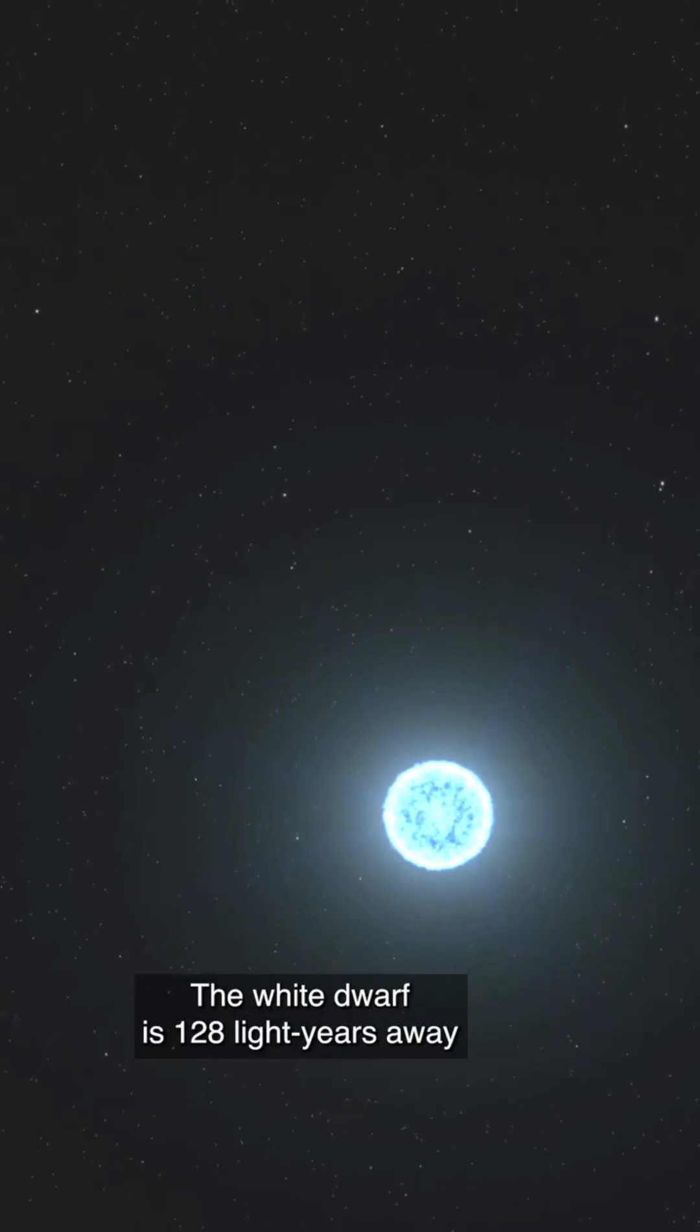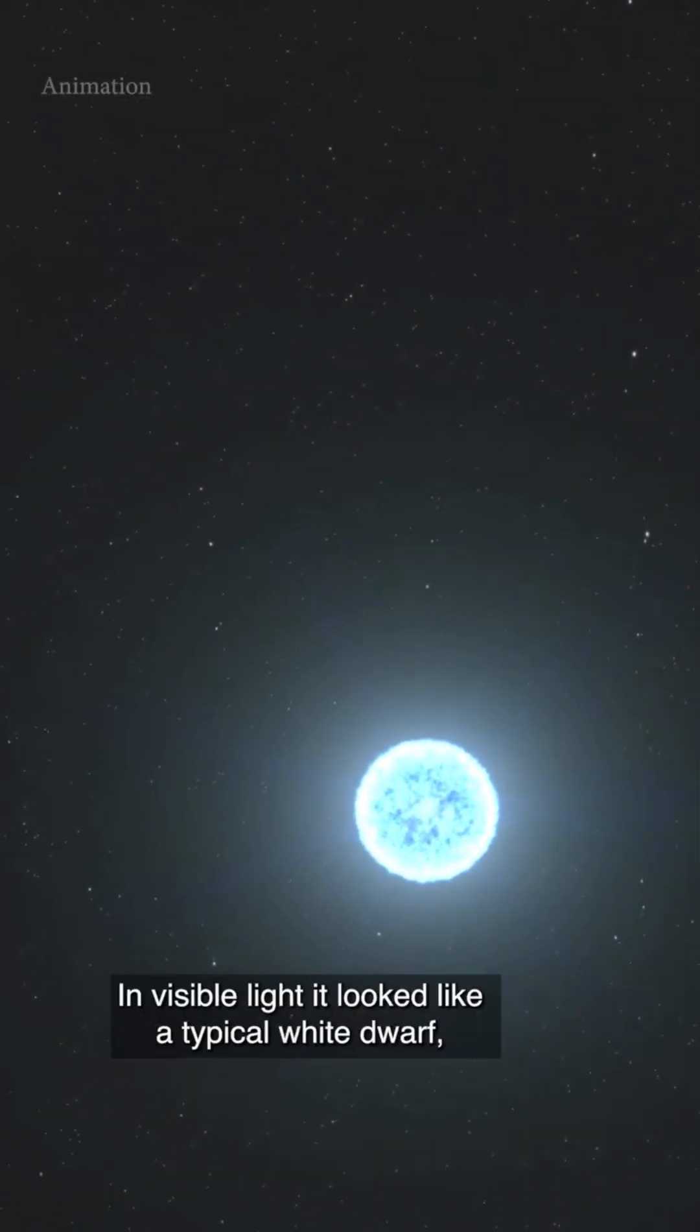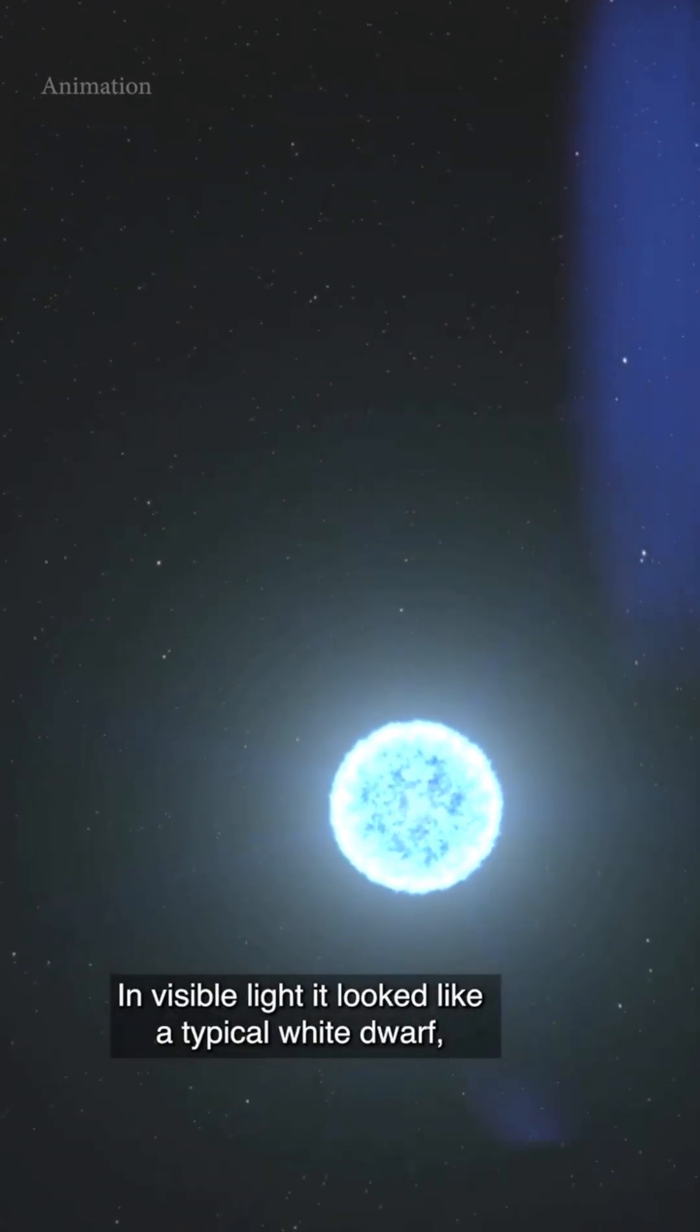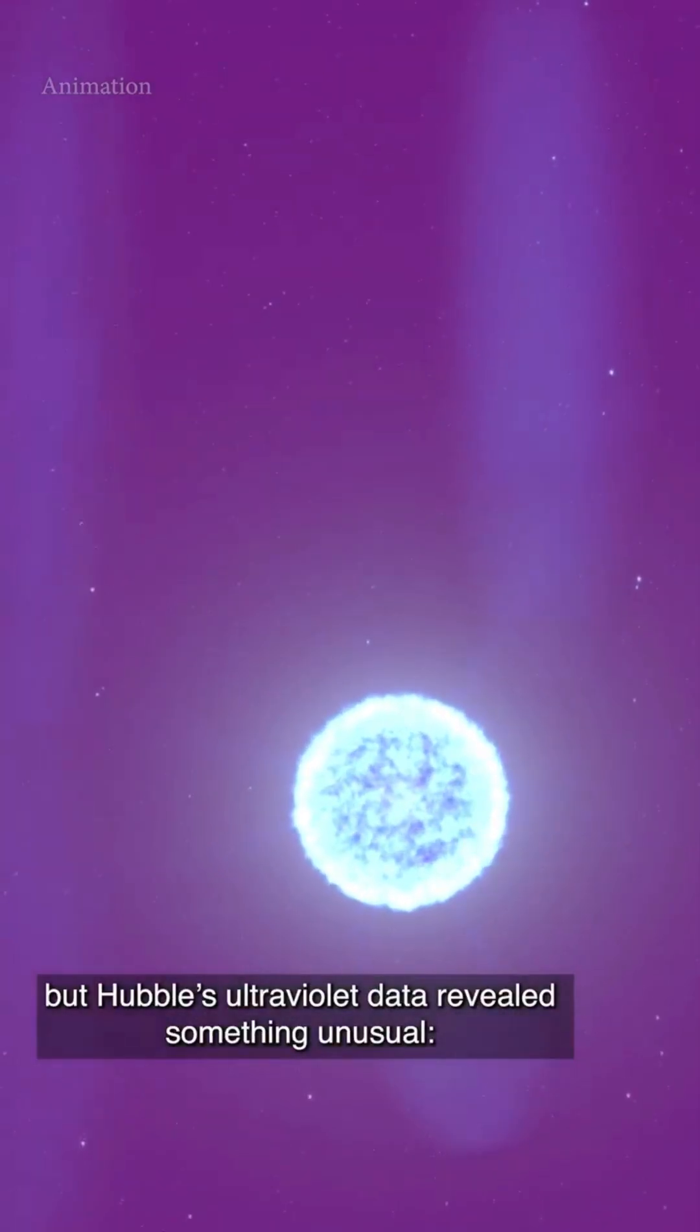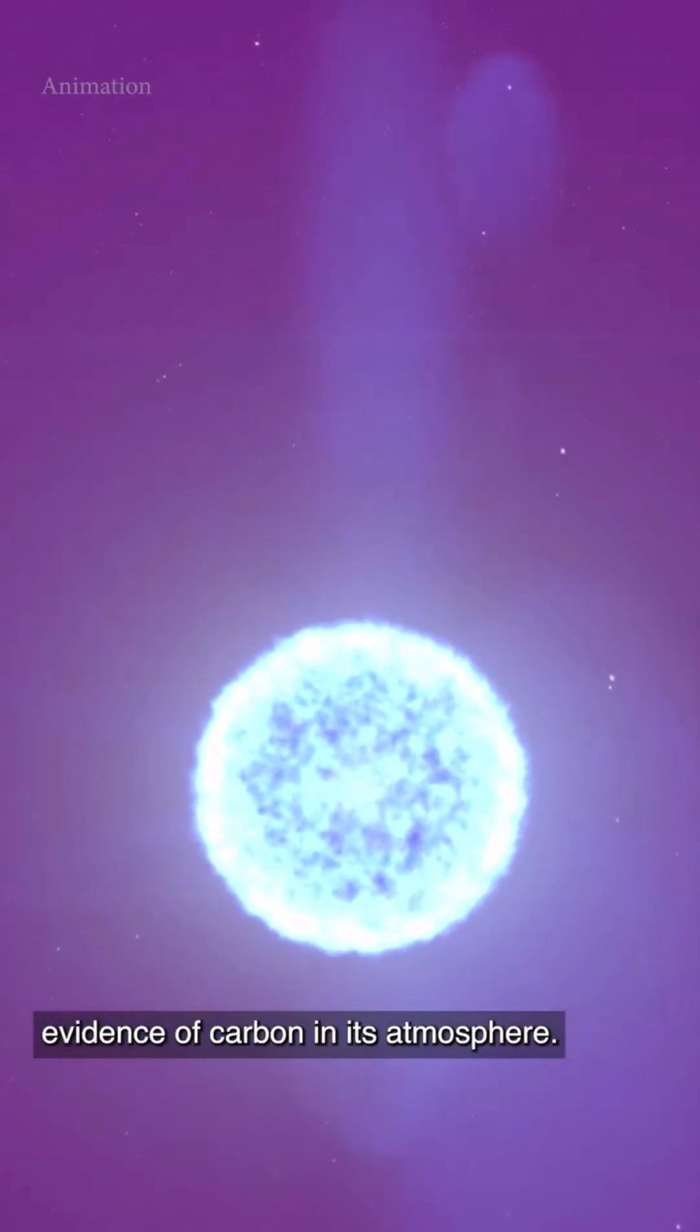The white dwarf is 128 light-years away and 20% more massive than the Sun. In visible light, it looked like a typical white dwarf, but Hubble's ultraviolet data revealed something unusual: evidence of carbon in its atmosphere.